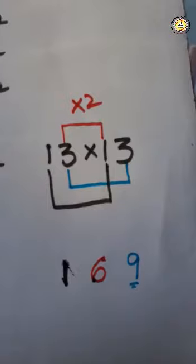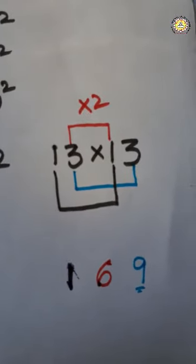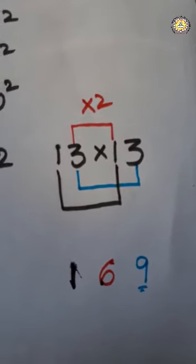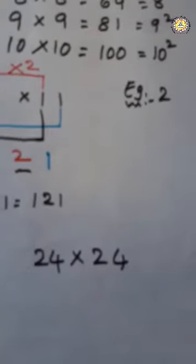Same way you can find 4, 25 into 25, 24 into 24. So one more example I will explain with the digits. Now look here.